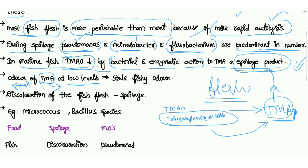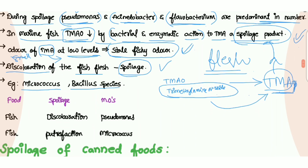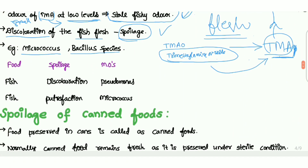TMA is a spoilage product, and even at low levels a fishy odor will occur. Discoloration of the fish flesh is also a sign of spoilage — the color will change. Examples of spoilage-causing microorganisms include Micrococcus and Bacillus species; Pseudomonas causes discoloration, while Micrococcus causes putrefaction — the decaying and deterioration of the fish.